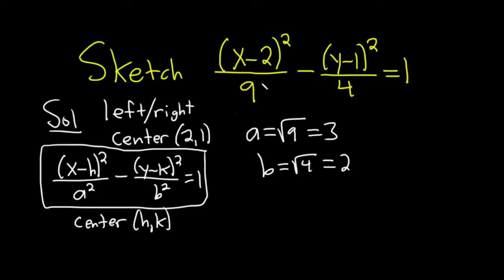So a is just always the square root of whatever is here based on this formula. I should emphasize that different books have different formulas and different ways of presenting this material, which makes it more confusing if you're just learning this. But a is the square root of whatever is here using this method, always. In an ellipse, a is the square root of the bigger number. In a hyperbola, a is the square root of whatever is here. If x comes first, it opens left and right; if y comes first, it opens up and down.